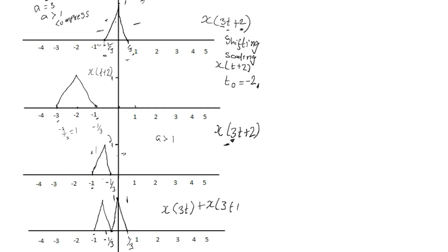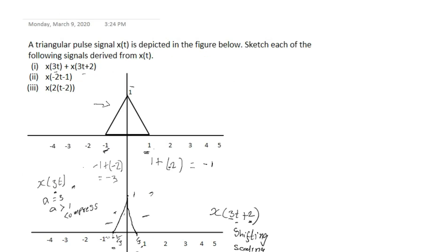This is our final combined signal, which equals X(3t) plus X(3t+2). In the next video, we're going to see the remaining two questions, which involve amplitude scaling, scaling and shifting, and scaling of a negative signal.